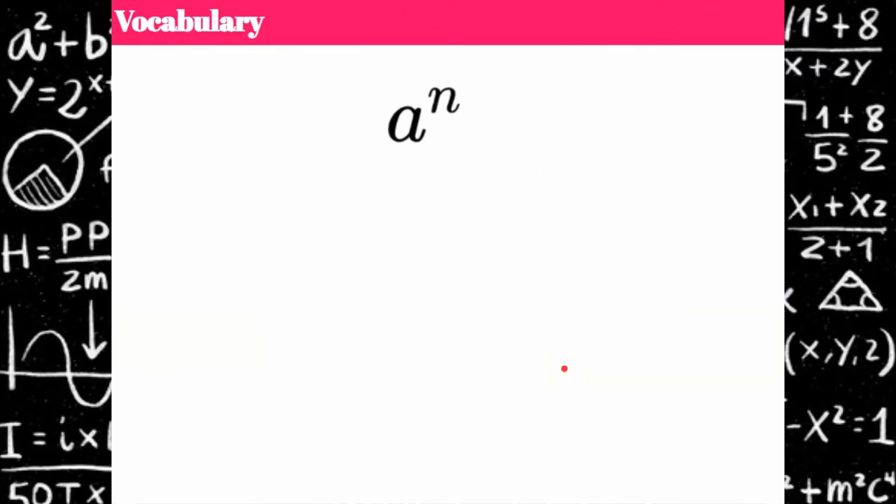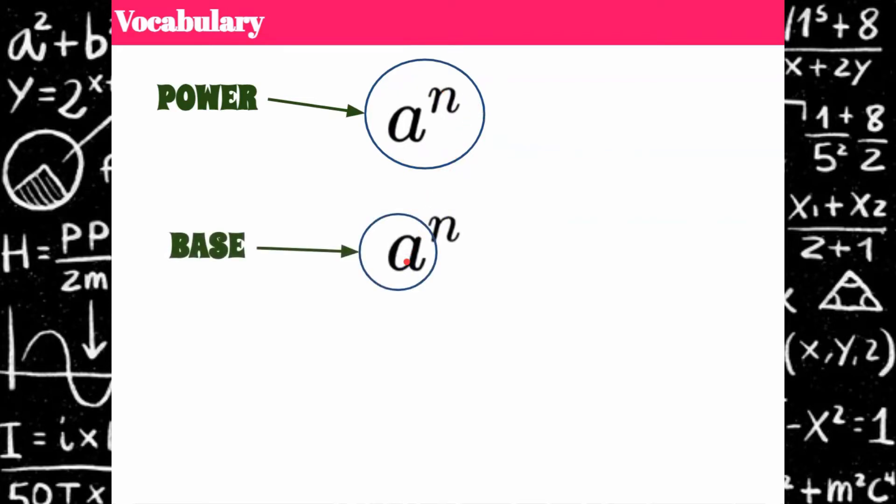So let's go over some key vocabulary words before we begin. This right here is an expression that we call a power, a raised to the exponent n. The whole expression is an exponent. a is our base, n is our exponent. So a base raised to an exponent is a power.